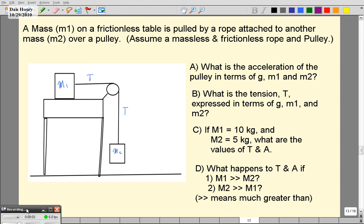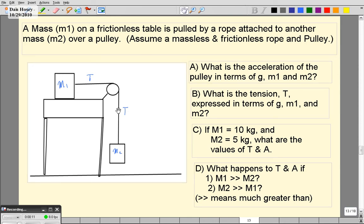In this problem we have two masses. We have mass 1, which is up here on a frictionless table. And then we've got mass 2, which is hanging off of a pulley. For this problem, the simplest kind, we have a massless pulley and a massless rope. So we just have two blocks.